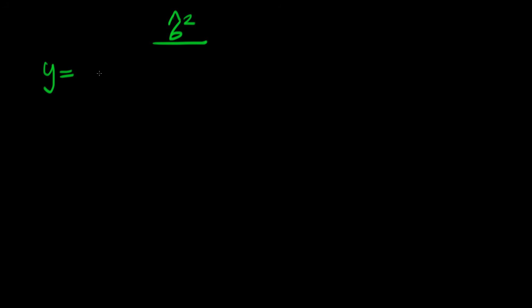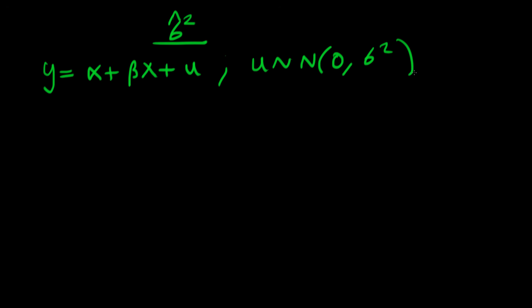In this video we're going to be talking about how we go about estimating the population variance sigma squared, and our estimator for this population variance we're going to call sigma hat squared. So let's just remind ourselves what we're talking about here. We have some sort of bivariate population process which is y is equal to alpha plus beta x plus some error u. And this error u we're saying is normally distributed with a mean of 0 and a variance of sigma squared.